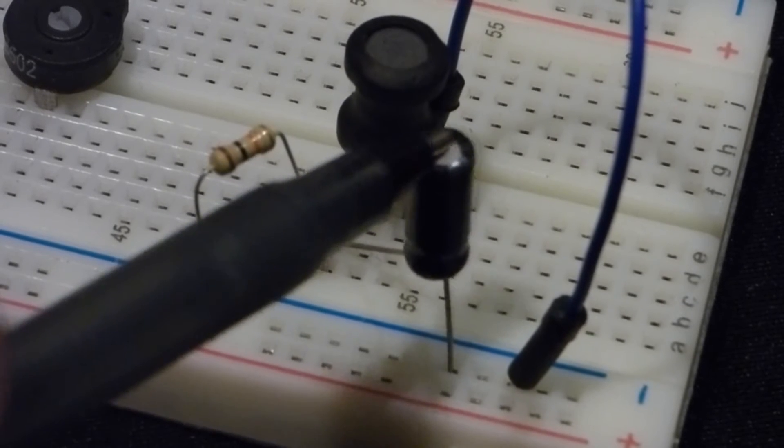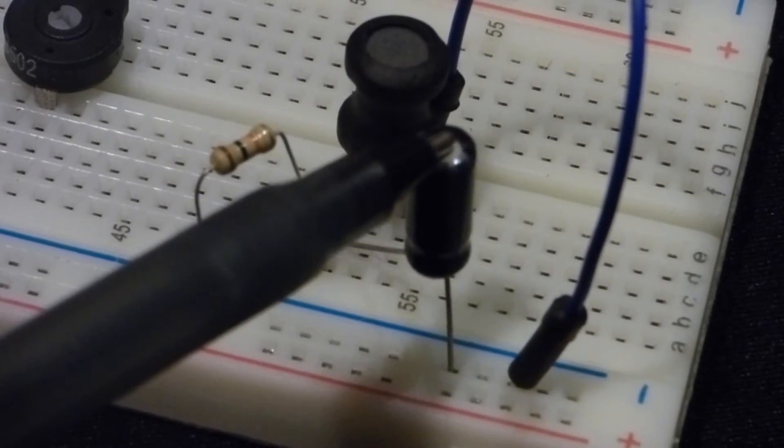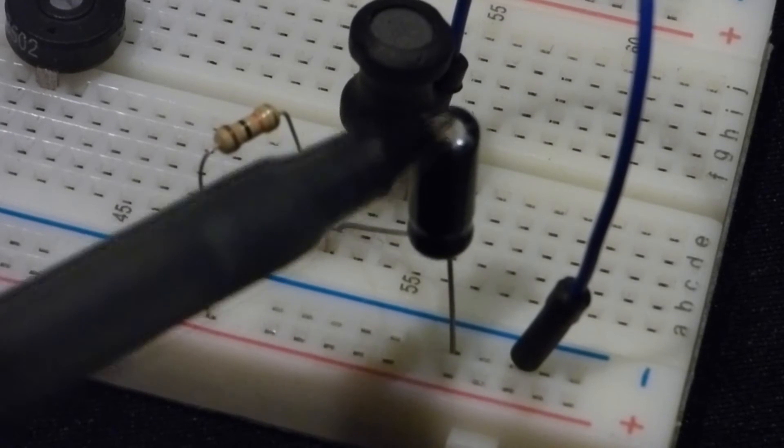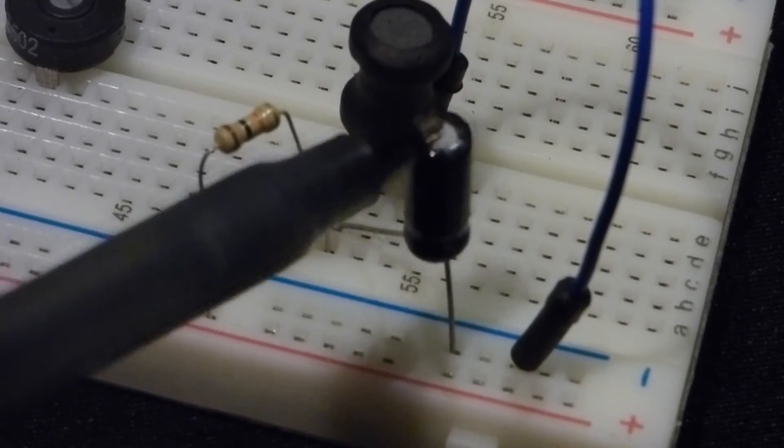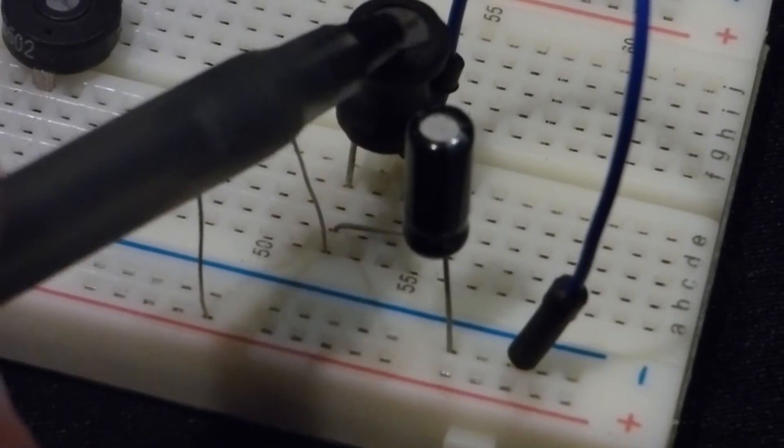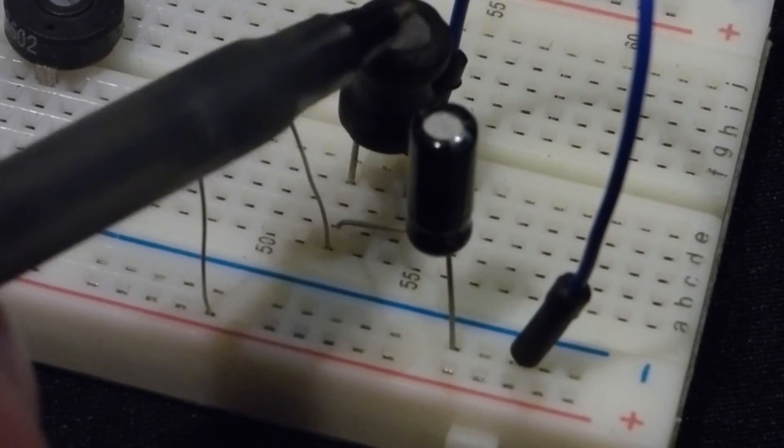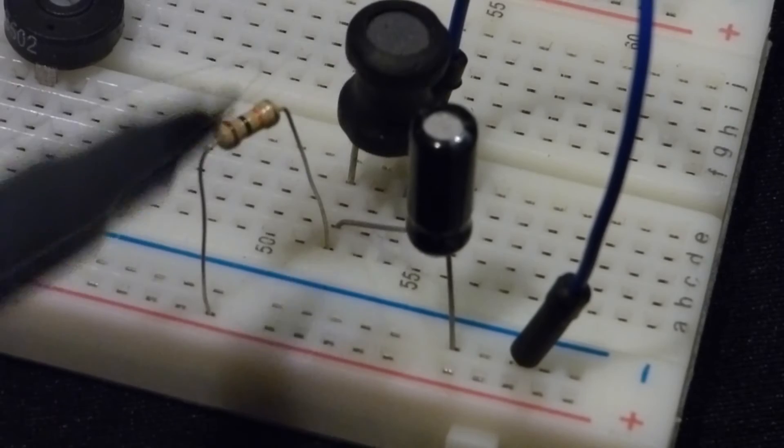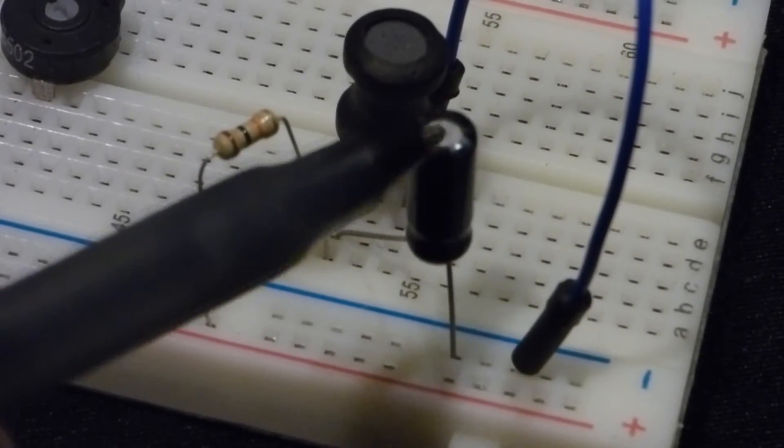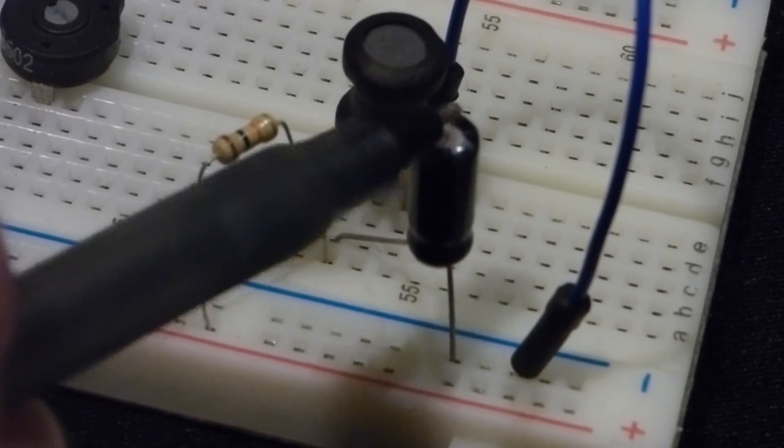At first, the capacitor is going to charge because capacitors accept a change of current really easily when there's a voltage difference. But when you put a voltage difference across an inductor, at first it resists the change in current. So current flows easily into the capacitor and it charges up a bit.